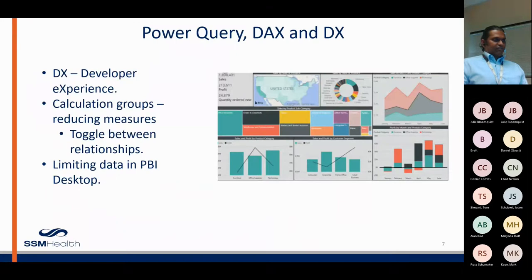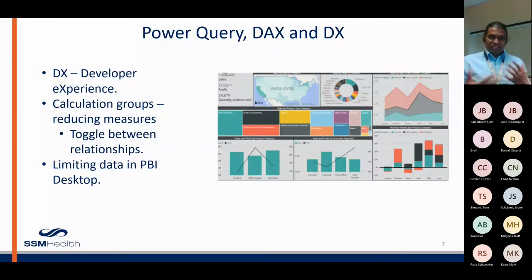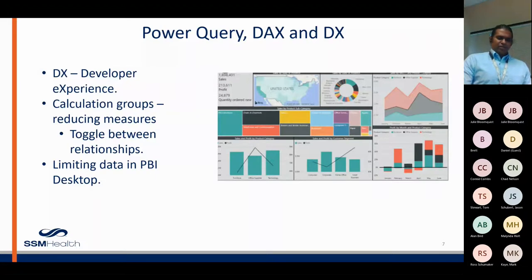So I covered calculation groups, toggling relationships, and limiting data in Power BI Desktop. These are all part of developer experience improvements. When you use these, you reduce the number of measures and give users some control over what they select and want to see, instead of having to hard-code all those options. Especially with the newer bookmark navigator and page navigator features, it's a lot easier to use those approaches.